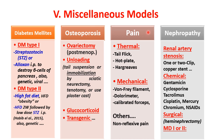Pain models are either thermal or mechanical. For thermal pain, the most famous is the tail flick test — the tail is placed near heat and the time until the animal flicks it away is measured. There is also the hot plate test and the Hargreaves model. For mechanical pain: von Frey filaments, dolorimeter, and calibrated forceps. Some of these are considered reflex pain models, others non-reflex. Details are in the references.